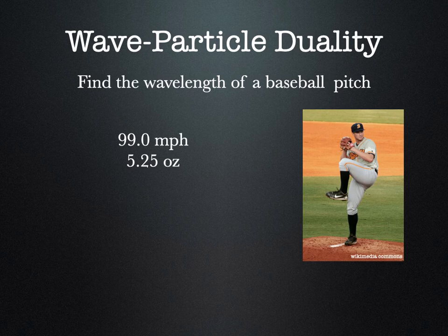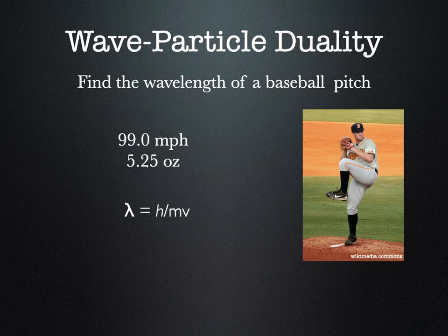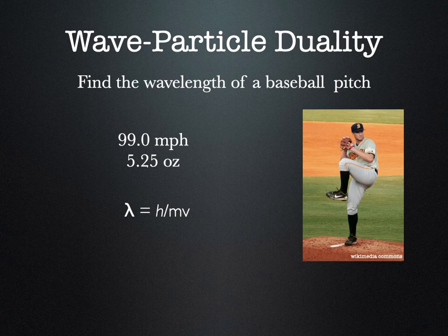Setting aside those dubious assumptions, we have a mass and a velocity, so we can use the de Broglie equation to figure out the wavelength of a 99 mile-an-hour fastball. First, you'll have to do some conversions — Planck's constant is in base SI units, but miles per hour and ounces are not. The miles per hour will have to be converted to meters per second, and the ounces to kilograms. You should pause the video, set up some unit conversion boards, and carry out those conversions.